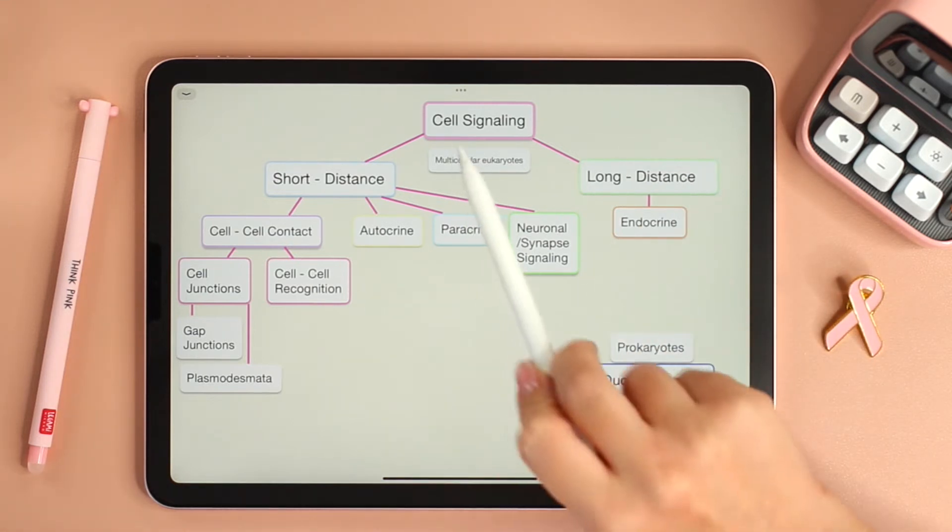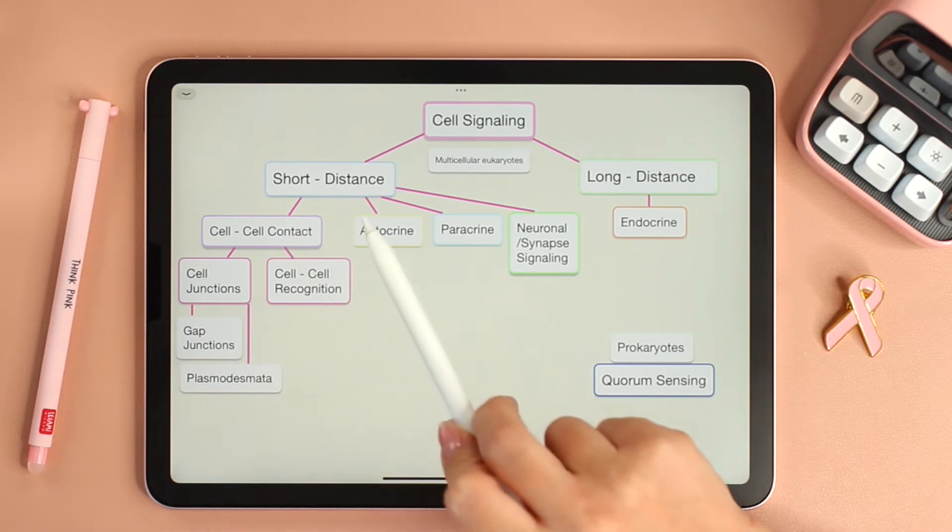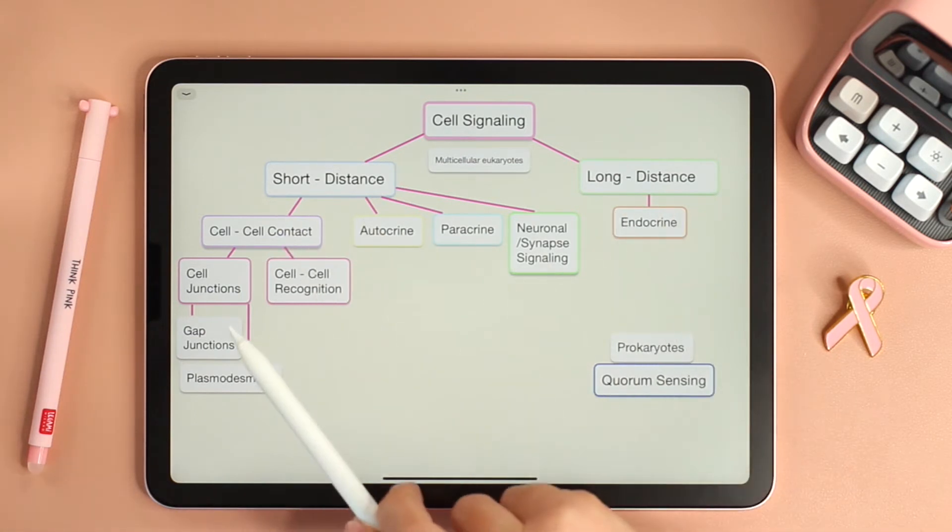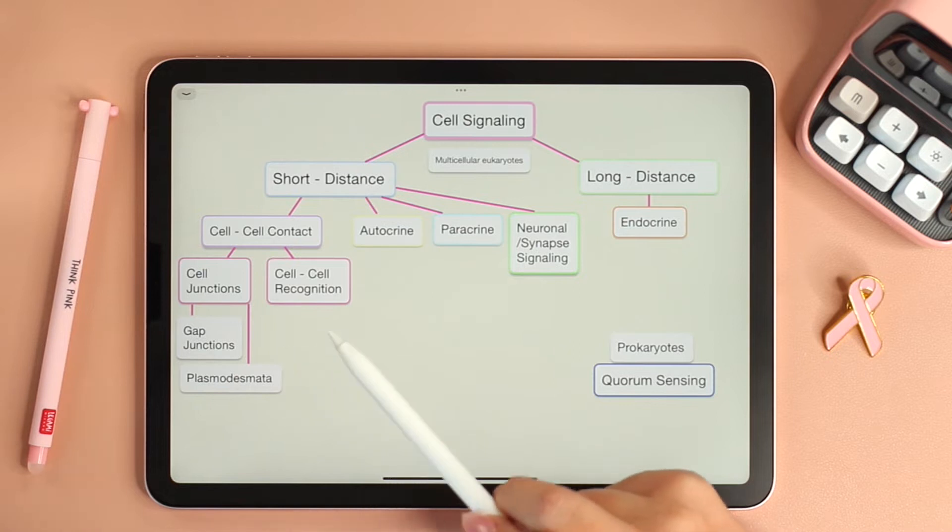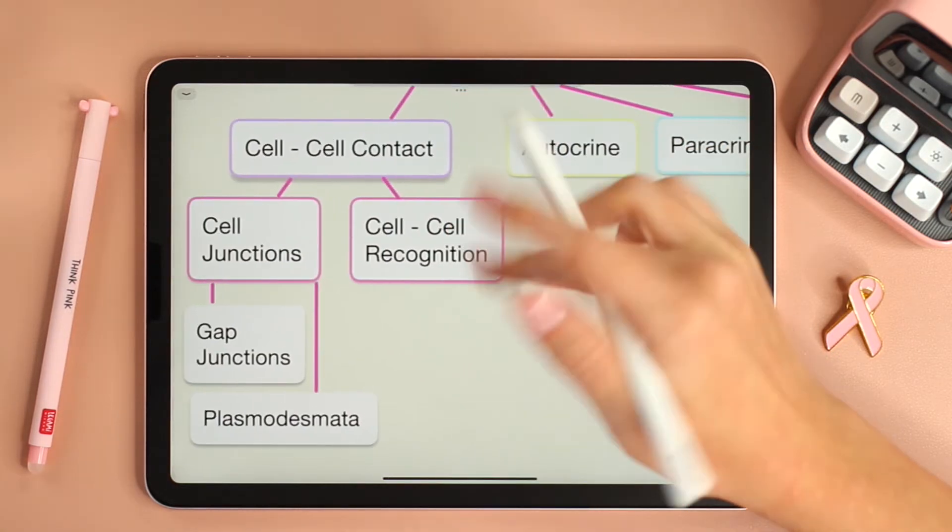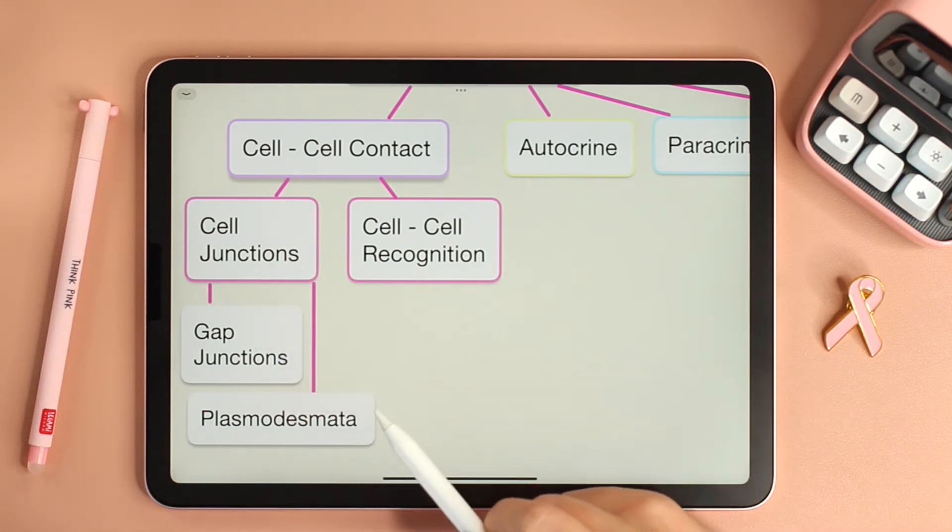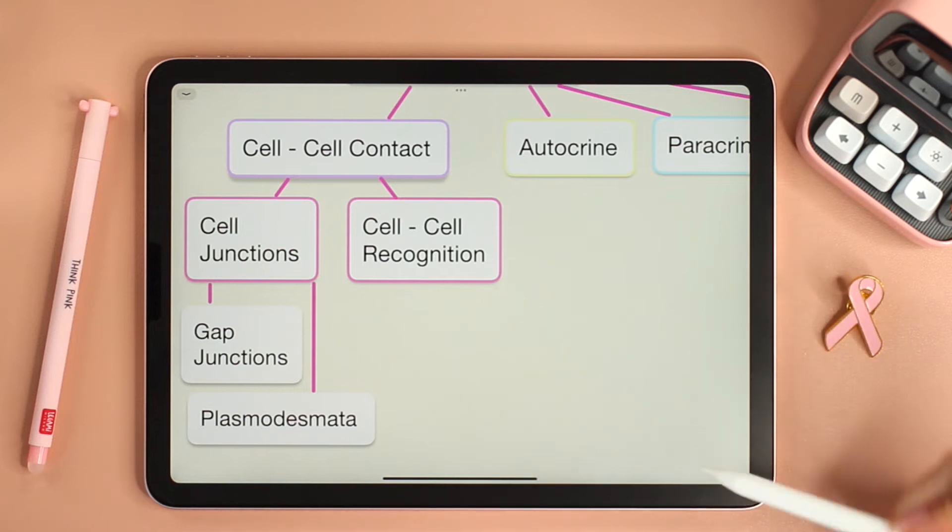As you can see here, cells communicate over short distance and long distance. In short distance, we will start at cell-to-cell contact. The cells are so close that they communicate simply by either having junctions between them or recognizing one another. In today's video we will focus on cell-cell contact cell junctions. We will see two examples: gap junctions and plasmodesmata. So let's take a look together and then answer our question of the day.